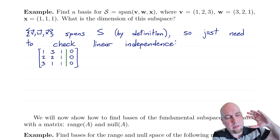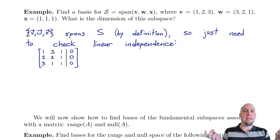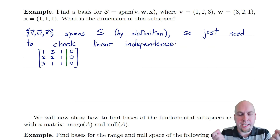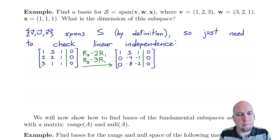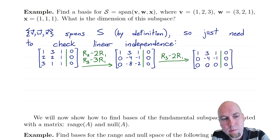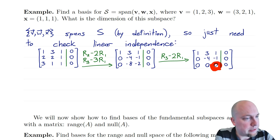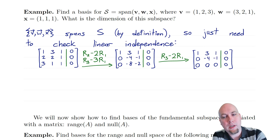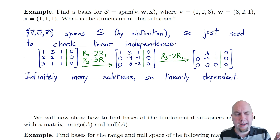Is this set linearly independent? The way you check linear independence is you stick the vectors into a matrix as columns — here's V, W, and X — augment with a zero right-hand side, and check. Either the linear system has a unique solution (all zeros), meaning linearly independent, or it has infinitely many solutions, meaning linearly dependent. After row reducing to row echelon form, we find a free variable in the third column. Because there's a free variable, there are infinitely many solutions, so the set is actually linearly dependent — it's not a basis.